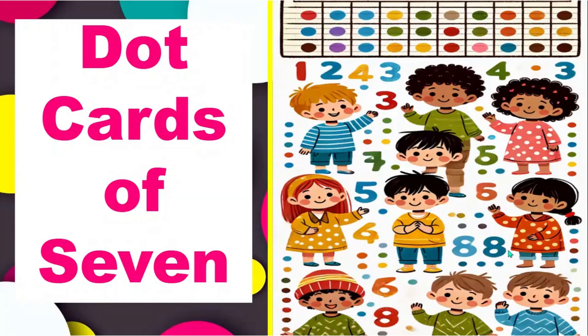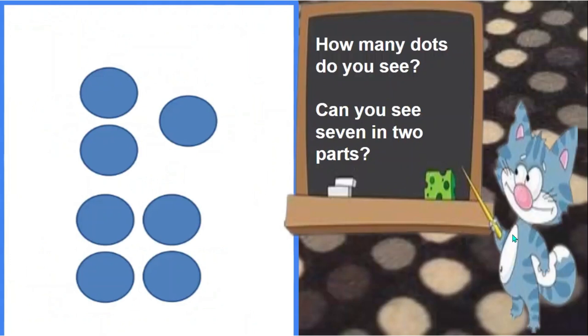This fluency is called Dot Cards of Seven. Take a look at this dot card. How many dots do you see? Can you see it in two parts?